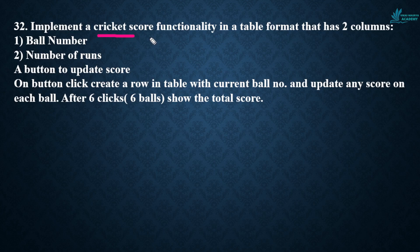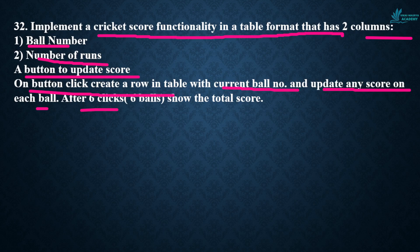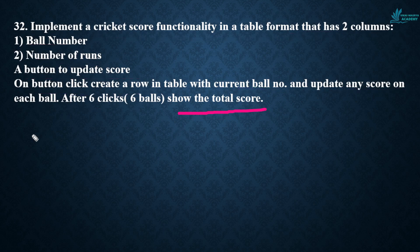Implement a cricket score functionality in a table format that has two columns: ball number and number of runs, with a button to update the score. On each button click, create a row in the table with the current ball number and update the score on each ball. After six clicks — six balls — show the total score. That was the last question.